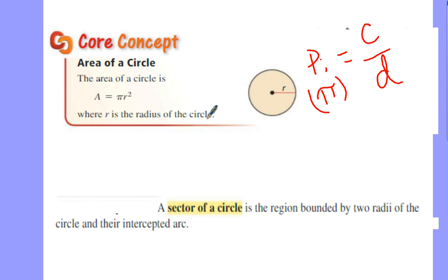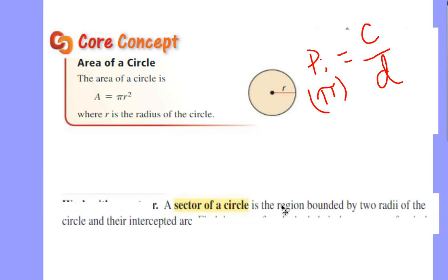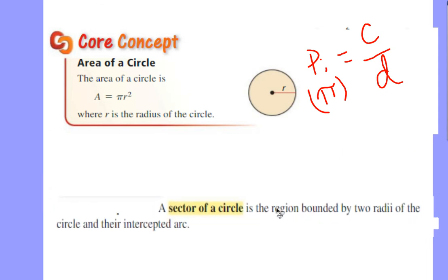And so that's what we're going to focus on here, this area of a circle. Now, specifically, we're going to dive into later on what a sector of a circle is. And in a little bit more mathematical scholarly wording, a sector of a circle is just the region bounded by two radii of the circle and their intercepted arc. I don't know about you, that is an extremely scholarly definition that we're diving into there.